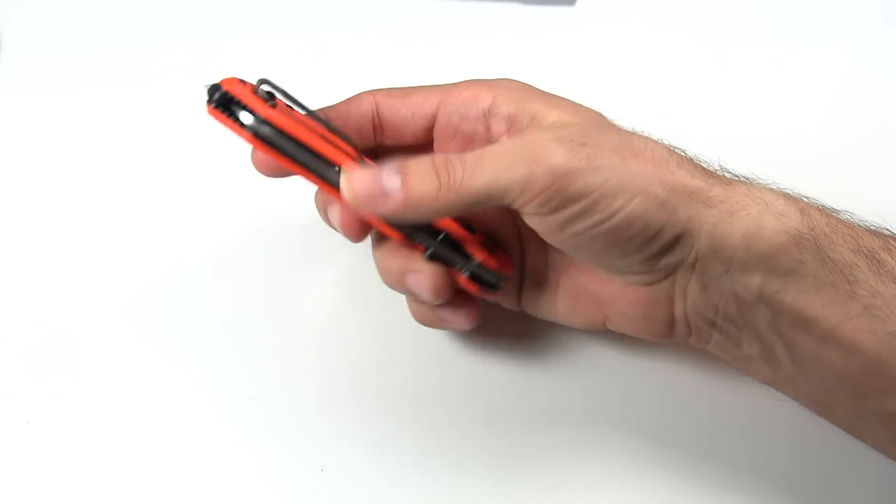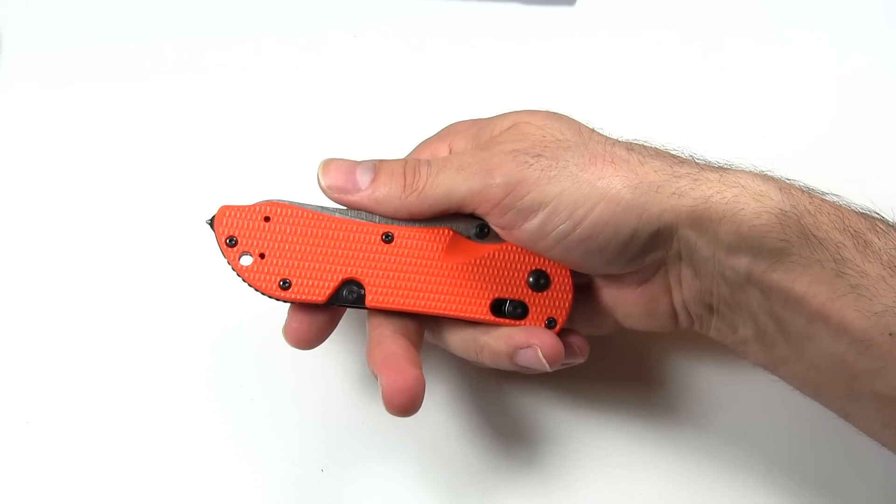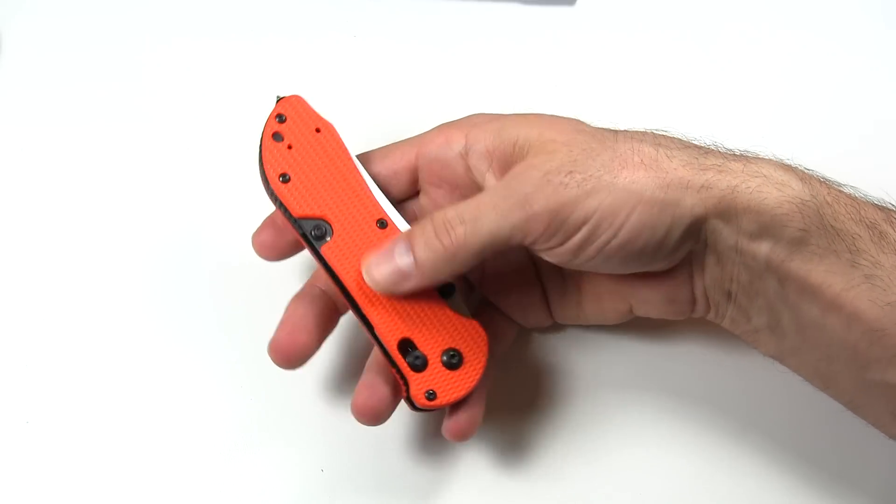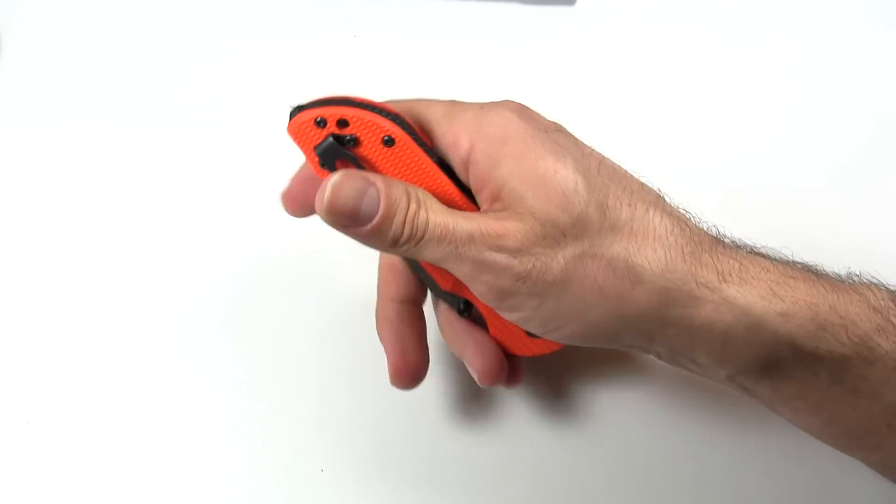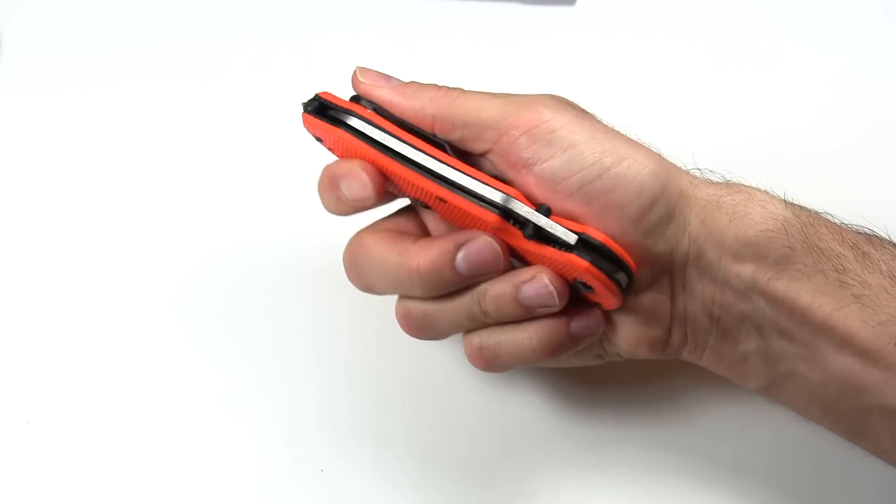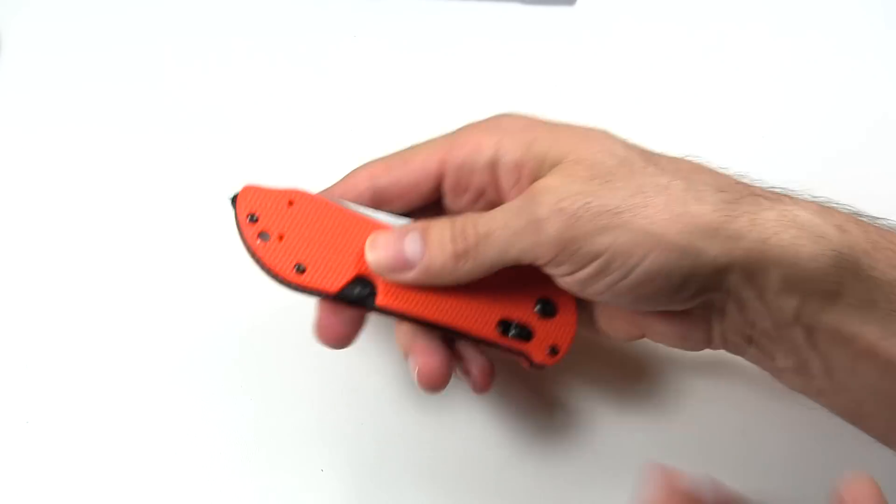So how about the handle? The handle is G10. Very, very, very textured handle. First thing I thought about this knife when it got out of the box was, wow, is that grippy kind of rough. You could almost use this as sandpaper. It's so grippy.